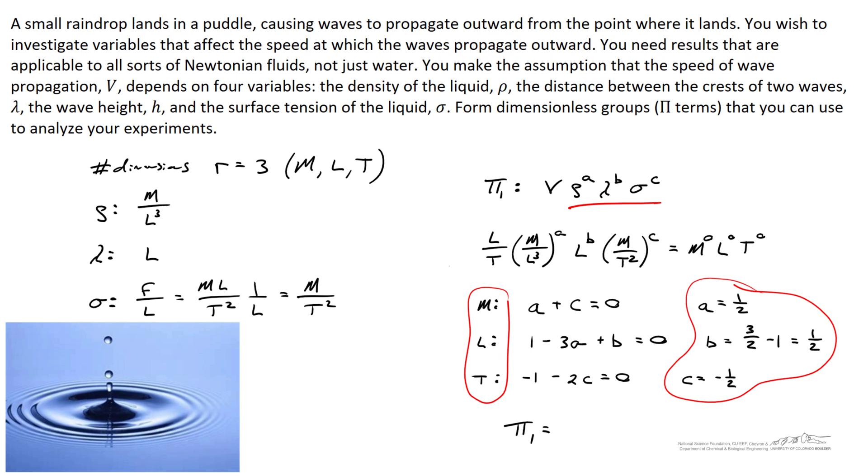So using these coefficients, the first pi term, pi one, is going to be equal to v, the velocity, multiplied by the density to the a power, which is rho to the one half, the wavelength raised to the b power, or also one half, and the surface tension raised to the negative one half power. And we could write it out like this, the velocity multiplied by the square root of the product of the density and the wavelength divided by surface tension.